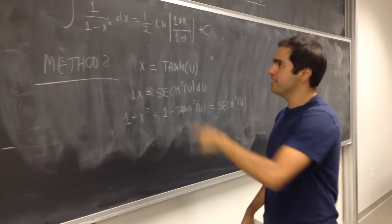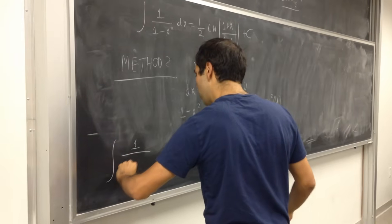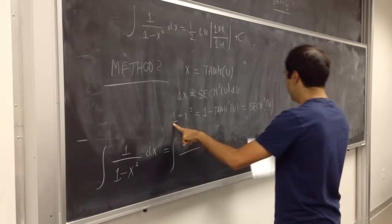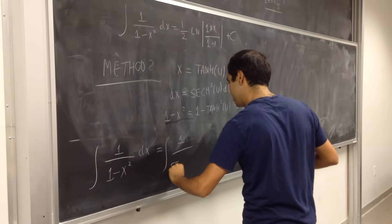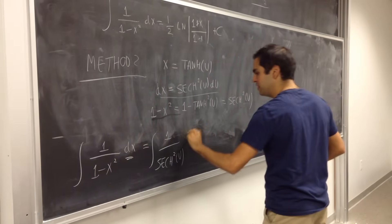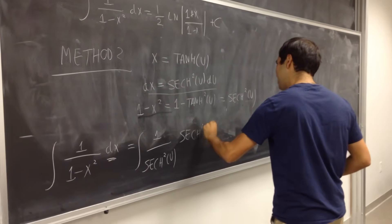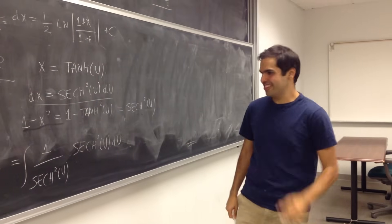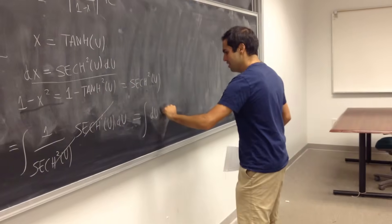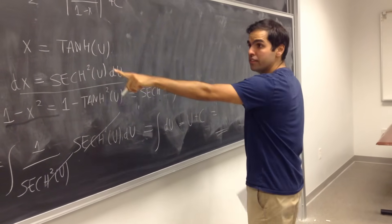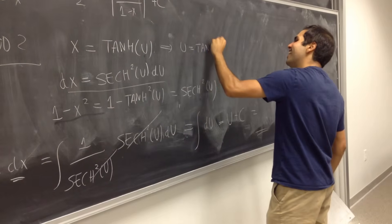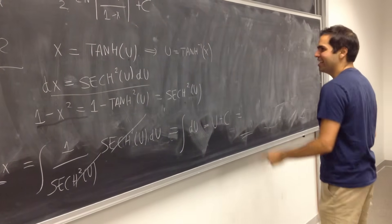This tells you that the integral becomes much simpler. The integral of 1 over 1 minus x squared dx becomes 1 over sech squared of u, times sech squared of u du — and if you're still watching, this is where stuff gets exciting — we're left with the integral of 1 du, which becomes u plus a constant. But remember, from x equals tanh(u), u equals arctanh(x).